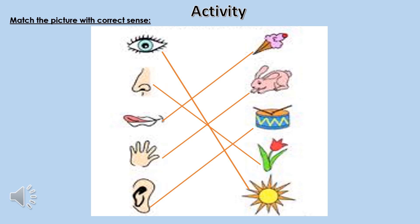In this activity, you have to match the pictures with the correct sense. Eyes can see the sunlight. Nose can smell the flower. Tongue can taste the ice cream. Hands can touch the rabbit. Ears can hear the sound of the drum. This is the activity in which you have to do matching.